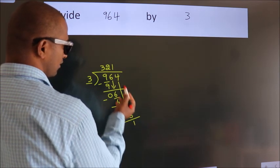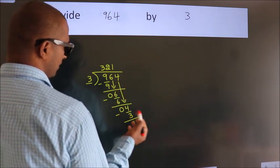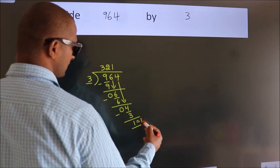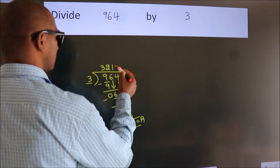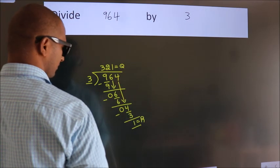After this, no more numbers to bring it down. So, we stop here. This is our remainder. This is our quotient.